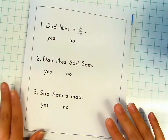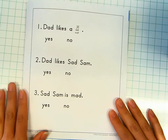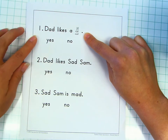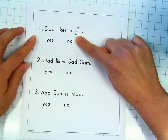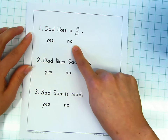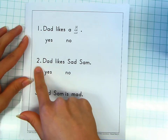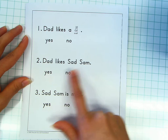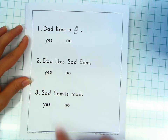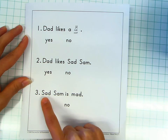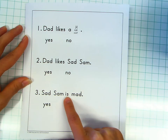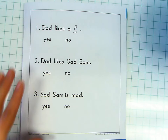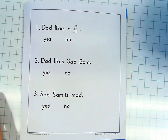Ask and answer these questions. Number one: Dad likes a cat. Yes or no? Number two: Dad likes Sad Sam. Yes or no? Number three: Sad Sam is mad. Yes or no?